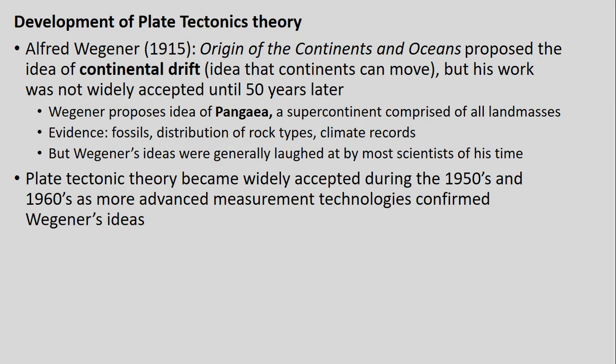The same fossils and same distribution of rock types — even proxies for climate records — were matching up for places now spread apart on different continents. It seemed to make sense that the continents may have once been together. However, when Wegener presented these ideas, he was generally not believed by other scientists at the time, who did not think this could possibly occur.